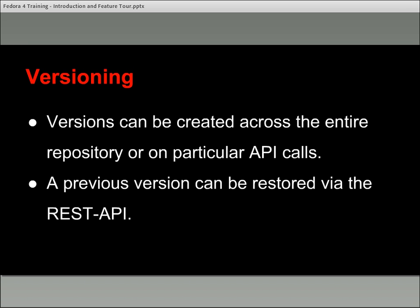Versioning is another key component, dealing with the idea of preservation. In Fedora 4, versioning is quite flexible. You can turn it on across the entire repository and have versions of your resources created every time you make a change. But there's flexibility in that you can have versions created on REST API calls — versioning off by default, creating a version only when you want to. Your application stack can determine what kinds of things get versioned. You may have particular data streams you don't want to version every update, or situations where you want to make an update without creating a version. You can also restore previous versions.